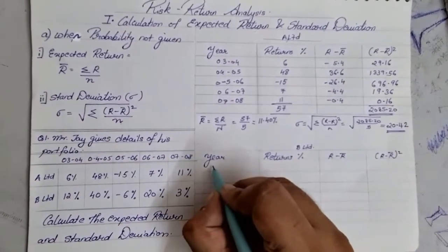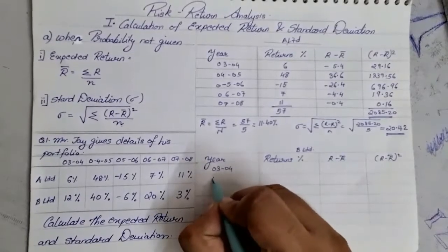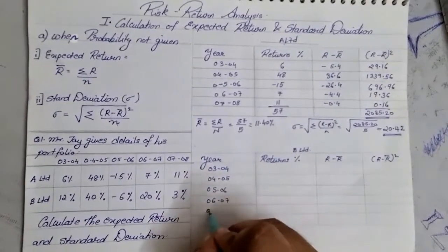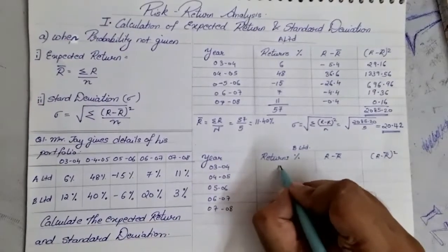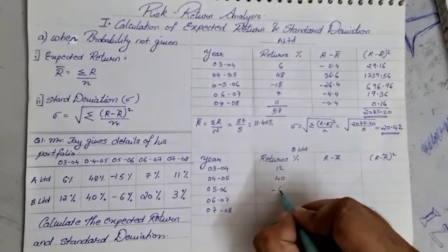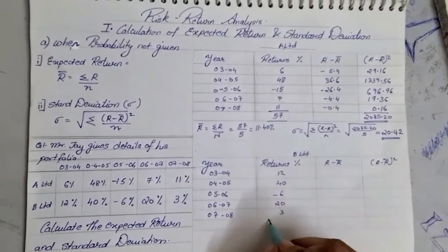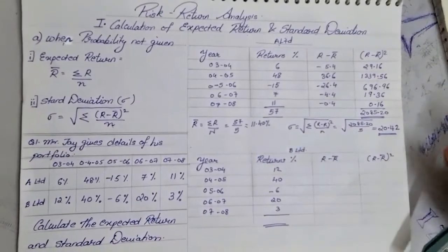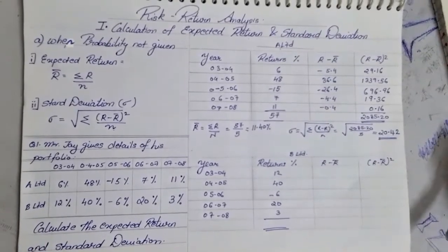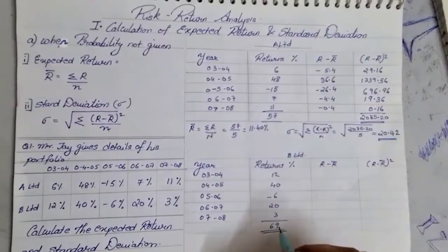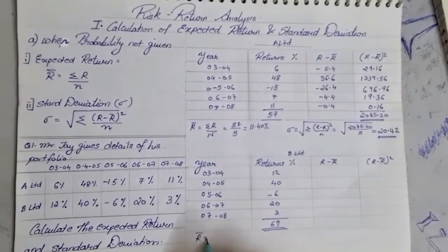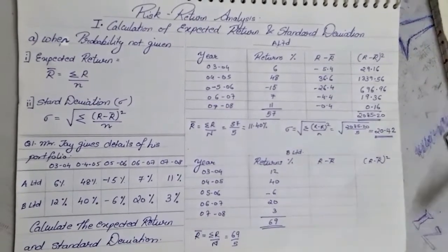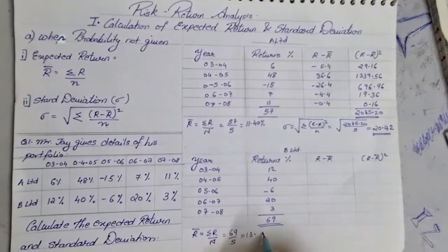Now similarly we will do the calculation for B Limited. The years are the same five periods from 2003 to 2008. The returns are 12%, 40%, negative 6%, 23%, and 20%. Adding them up — 12 plus 40 plus 20 plus 3 minus 6 — gives a total of 69. The expected return R-bar is 69 divided by 5, which comes to 13.8%.